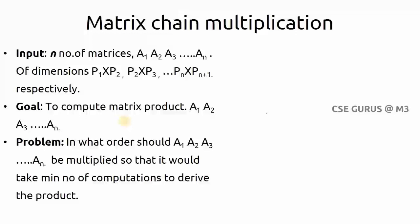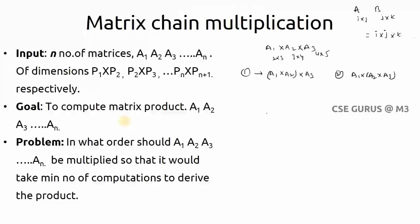Let me explain with an example. I have taken three matrices: A1 is of size 2 by 3, A2 is of size 3 by 4, and A3 is of size 4 by 5. Multiplication is possible because the column size of A1 equals the row size of A2, and the column size of A2 equals the row size of A3.